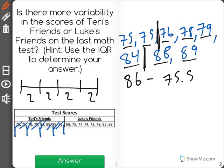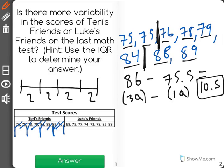And when we subtract, that's how you find the interquartile range, the third quartile minus the first quartile, we get a total of 10.5. That's the variability in Terry's friends.